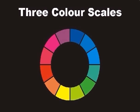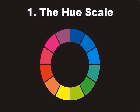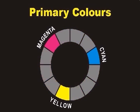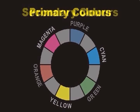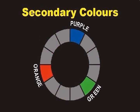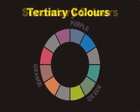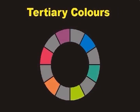There are three color scales. The color wheel is also called the hue scale. It has all the primary and secondary colors in their brightest, purest forms. The hue scale also shows tertiary colors that lie in between the primaries and the secondaries.